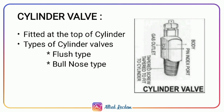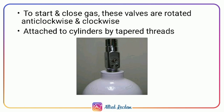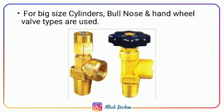The cylinder valve is the most important component of gas cylinders — it is the port through which gases are released, fitted on top of the cylinders. Types of cylinder valves are flush type and bull nose type. To open the cylinder, the valves are rotated in an anti-clockwise direction; to close, they are rotated clockwise. They are attached to cylinders by tapered threads. For big size cylinders, bull nose and hand wheel valve types are used.